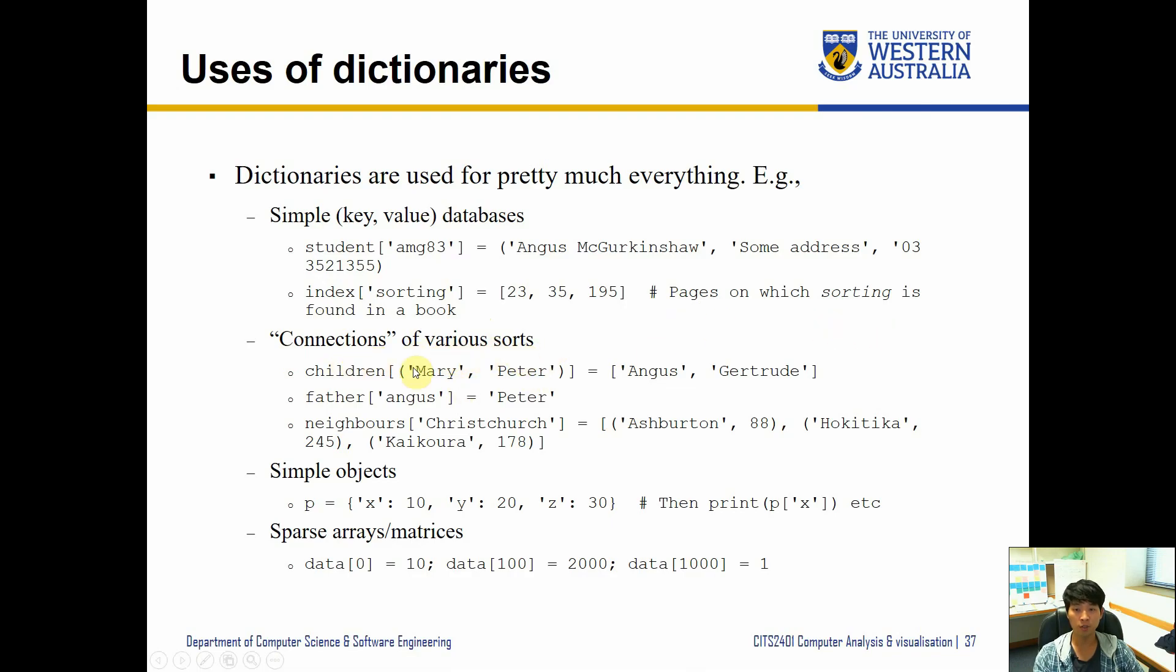Connections of various sort as well, so things like you can have pairs. So Mary and Peter, maybe parent of Angus and Gertrude. Maybe father of Angus is Peter. You can enter things like this, then this can form a relationship like links. So you can easily search who is the father of this person, and if it exists in the dictionary it will quickly look those up. You can even look up like neighbors of cities and so forth.